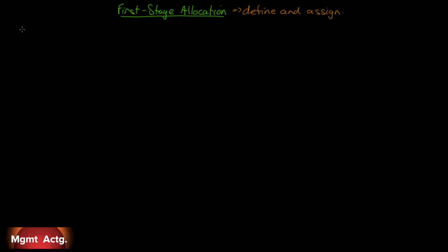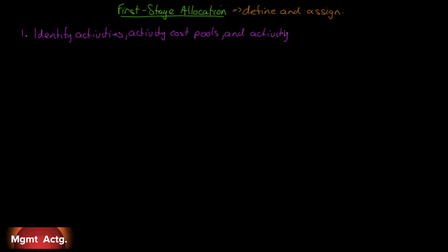Number one is define. You must identify activities, activity cost pools, and activity measures. So let's say that you're interested in tracking customers — you must define the activities that center around a customer, what the activity cost pool would look like, and what activity measure you're going to use. This requires a lot of judgment. It's not easy.